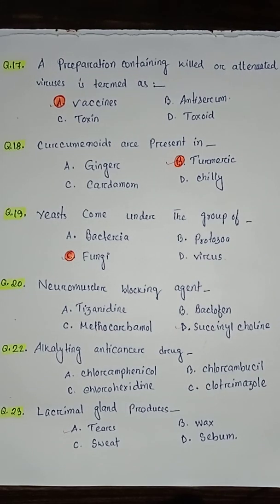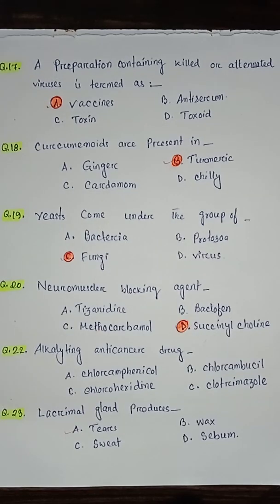Question number twenty: neuromuscular blocking agent — option A tizanidine, option B baclofen, option C methocarbamol, option D succinylcholine.